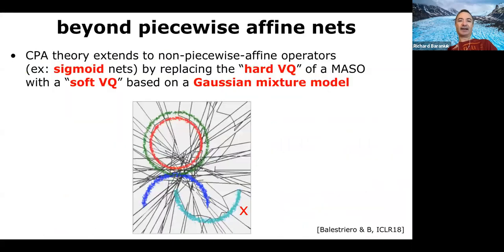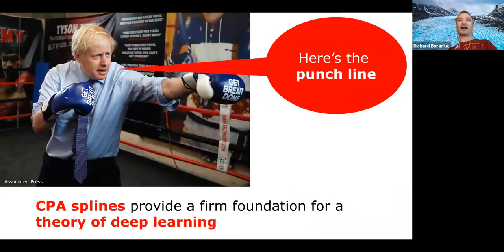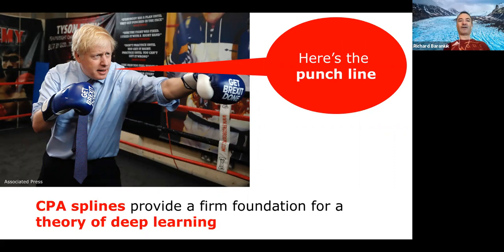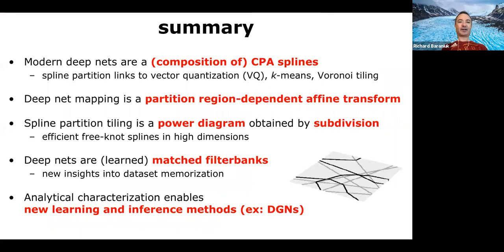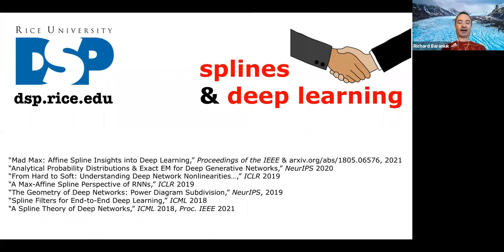To wrap up: there's a lot of work that can be done in this space — we're really just scratching the surface. The key takeaway is that splines, and in particular continuous piecewise-affine splines, provide a really nice framework and foundation on which to build a real theory of deep learning. Hopefully there's time for at least a few questions.